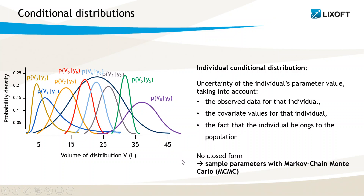These distributions cannot usually be computed in closed form, unless we have a linear Gaussian model, so it is not possible to directly calculate the probability for a given parameter. But it is possible to obtain samples from the distributions using a Markov chain Monte Carlo procedure.